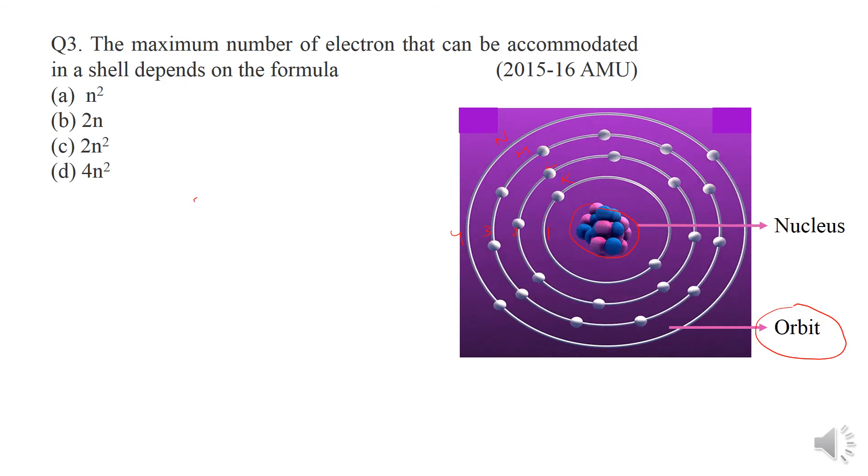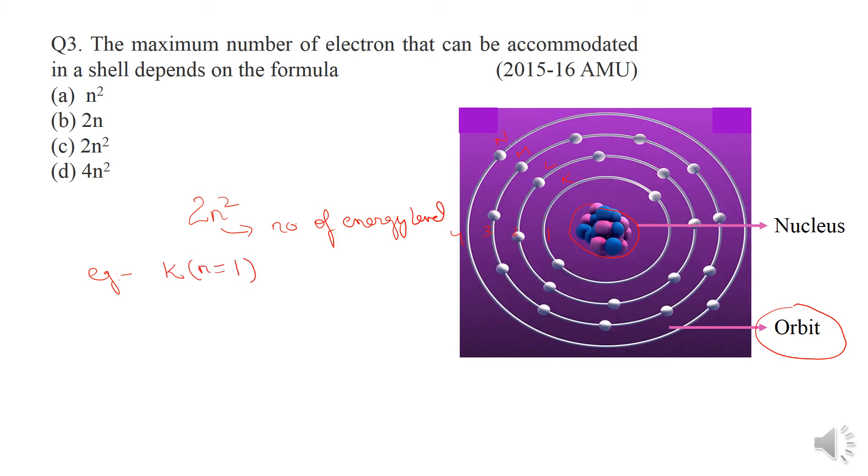Each shell can accommodate a particular number of electrons according to the formula 2n², where n is the number of energy level. For example, if we talk about K shell, n is 1 because it is first shell. So if we put it in this formula, 2 into 1 squared equals 2.